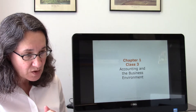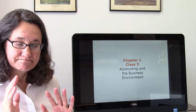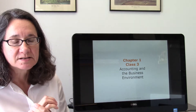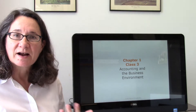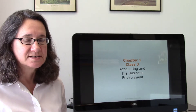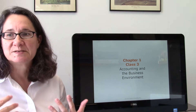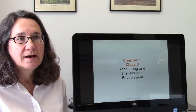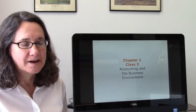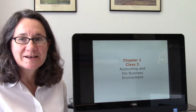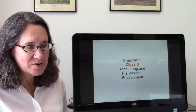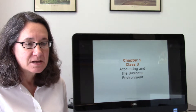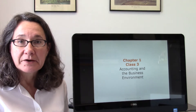Up till now we've learned that there are many kinds of accountants — cost accountants, financial accountants, management accountants — keeping track of information for organizations like sole proprietorships, corporations, and partnerships. They do it according to certain rules: U.S. GAAP, supervised by the SEC. So we've learned who does accounting and why. Now we're going to start learning how to actually do some accounting.